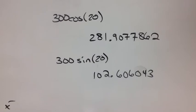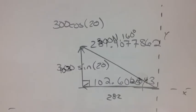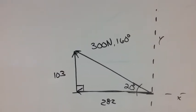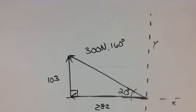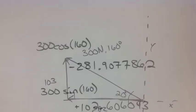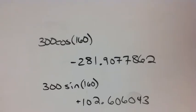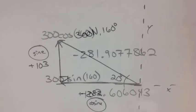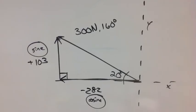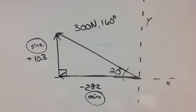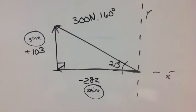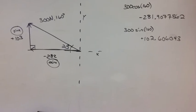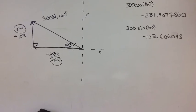282 and 103 newtons. If you've sketched your triangle to scale, you can just place those two values in the proper location. Or you could use 300 cosine 160 and 300 sine 160 to get the proper directions also. Negative is negative on the x or y, and positive is positive on the x or y. Hypotenuse cosine is x, hypotenuse sine is y.